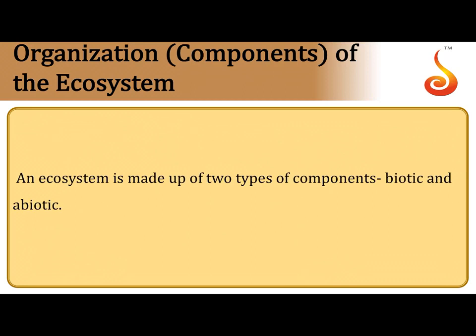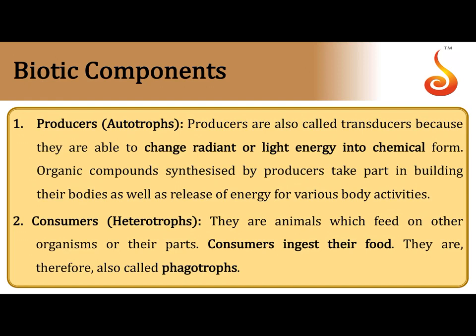An ecosystem is a dynamic system with constant interaction between two components: the living component called biotic and the non-living component called abiotic. The biotic components include producers — autotrophs which convert radiant solar energy into chemical energy in the form of organic substances. Organisms that cannot make their own food and depend on producers are referred to as consumers or heterotrophs, also called phagotrophs.